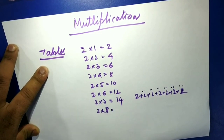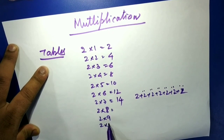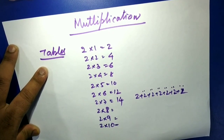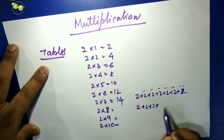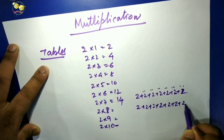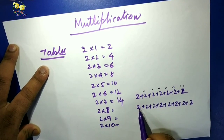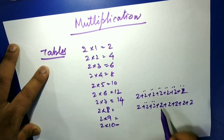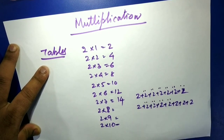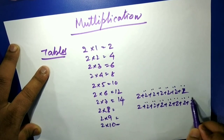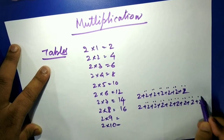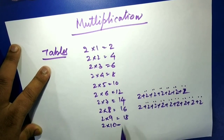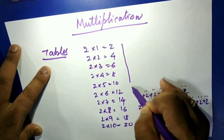Similarly, 2 eights: count 1, 2, 3, 4, 5, 6, 7, 8, 9, 10, 11, 12, 13, 14, 15, 16 — 2 eights are 16. 2 nines: plus 2 more — 17, 18 — 2 nines are 18. 2 tens: plus 2 more — 19, 20 — 2 tens are 20. This is the twos table.